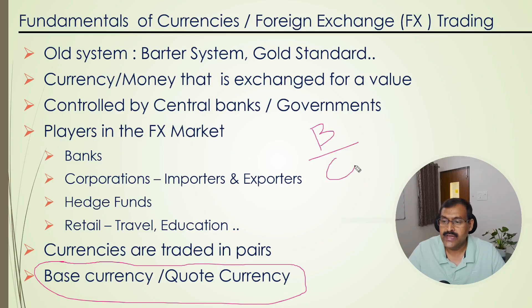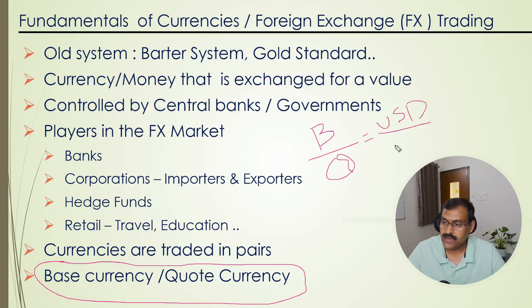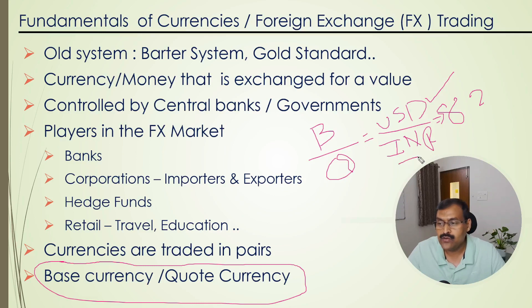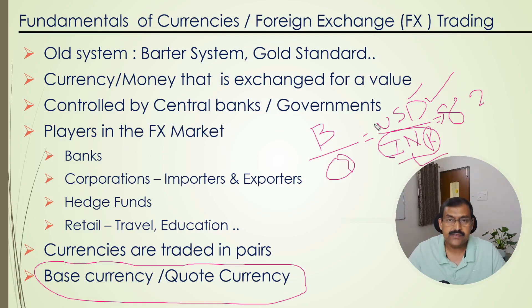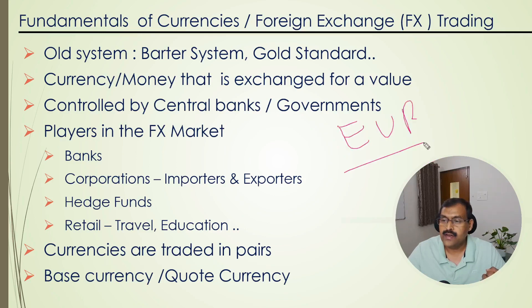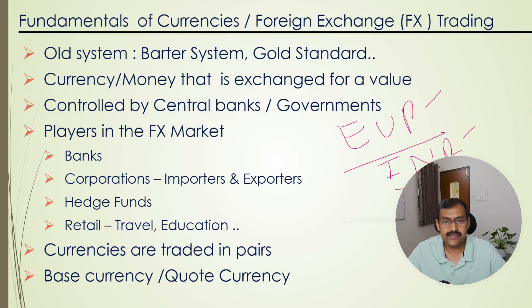Let me take an example of base and quote currency. We always need two currencies for trading. Let us take USD as the base currency and INR as the quote currency, currently trading at 82 rupees. What does it mean? It means one unit of the base currency equals 82 units of the quote currency. So if you have to buy one unit of US dollar, you have to pay 82 units of Indian rupees. There can be different pairs with different base and quote currencies. USD/INR is one pair where USD is the base and INR is the quote. Similarly, EUR/INR — EUR is the base currency and INR is the quote currency.